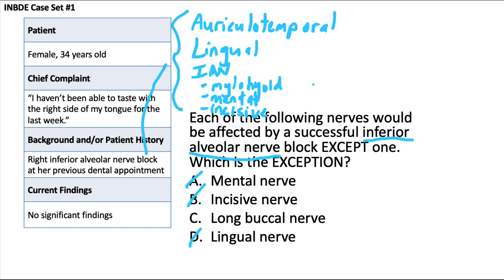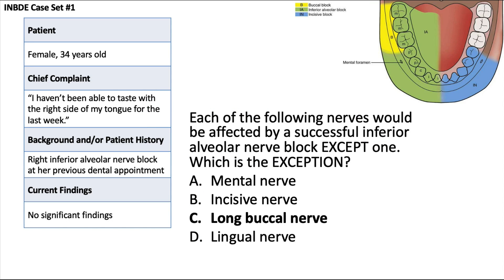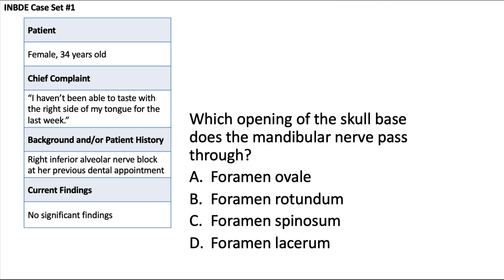For completeness, the anterior root — the part that doesn't get blocked — includes motor branches to the muscles of mastication: the temporalis, masseter, and lateral pterygoid. It also includes the long buccal nerve, which drapes over the coronoid notch area to supply the cheek and buccal gingiva of the posterior mandible. That one is not affected by the block and typically requires a separate injection. As shown in the diagram, the IAN block covers the green area, while the yellow area requires a separate injection for the long buccal nerve. The answer here is C.